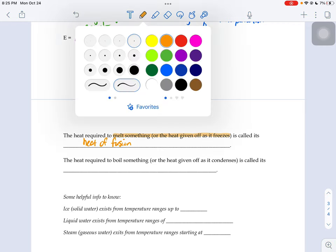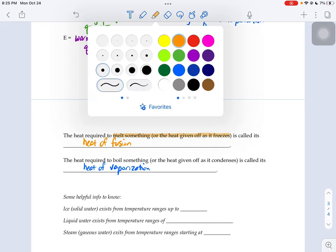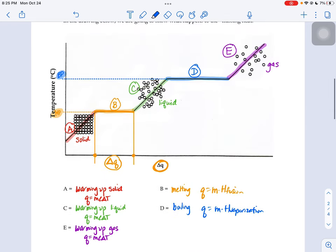If you're trying to get something to boil, the amount of heat needed to make that happen we call that heat of vaporization. And it's the amount of heat to boil something or condense for the same reasons as above.